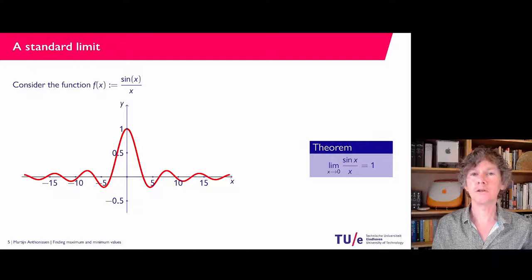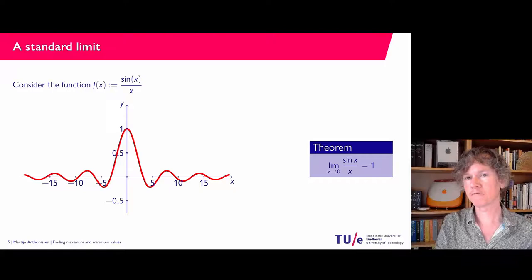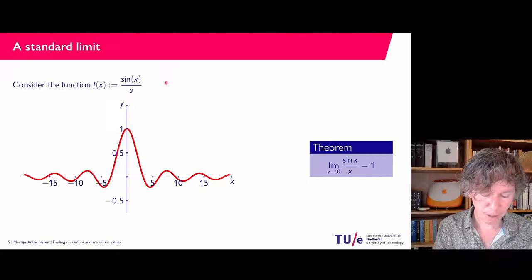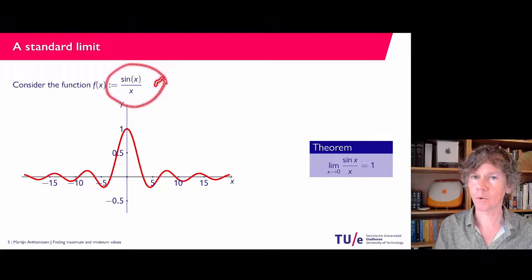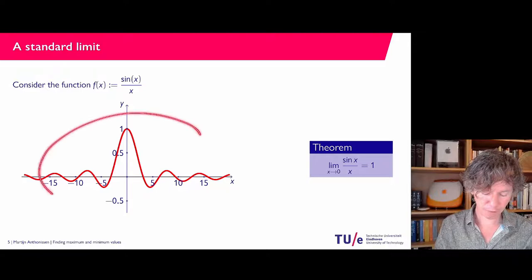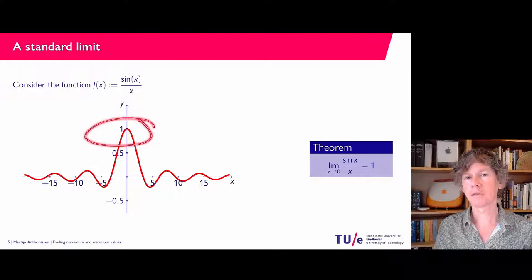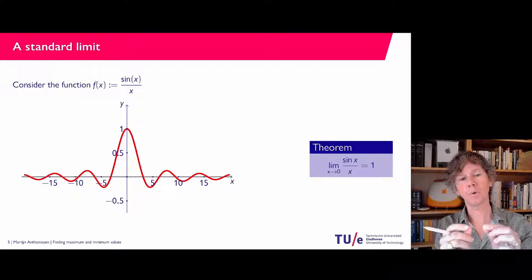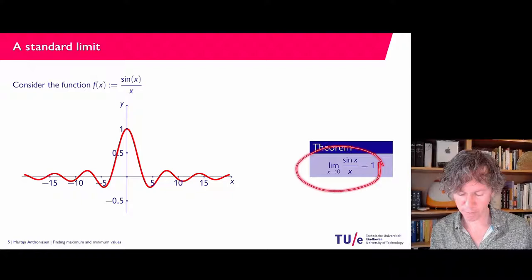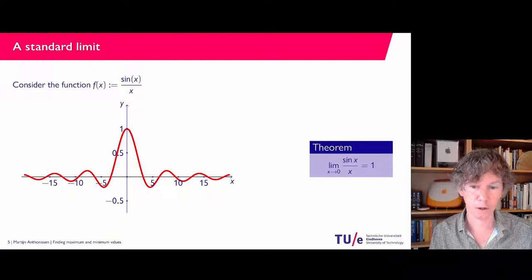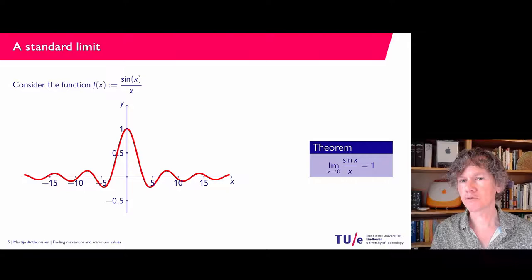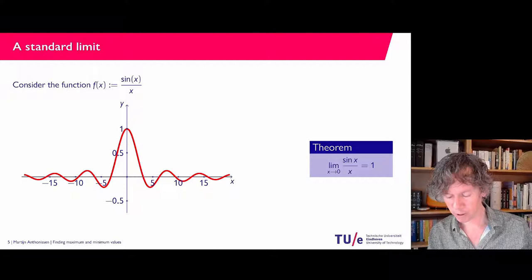Something else we will use: the limit of sin(x)/x as x approaches 0. At x = 0 we have a 0/0 problem. But if you plot the function, you can see that for values very close to 0, the function value is very close to 1. You can prove rigorously that the limit of sin(x)/x as x → 0 exists and equals 1. We will encounter this several times, sometimes in disguised form, so you should know this limit by heart.